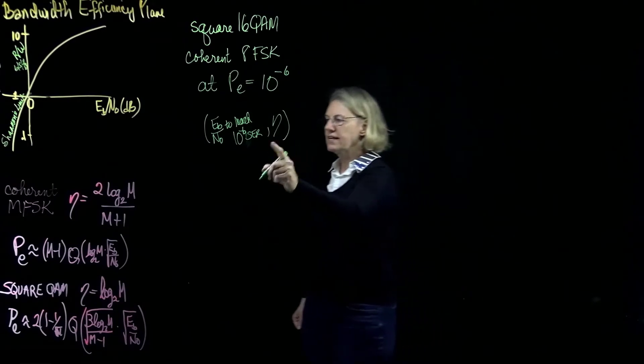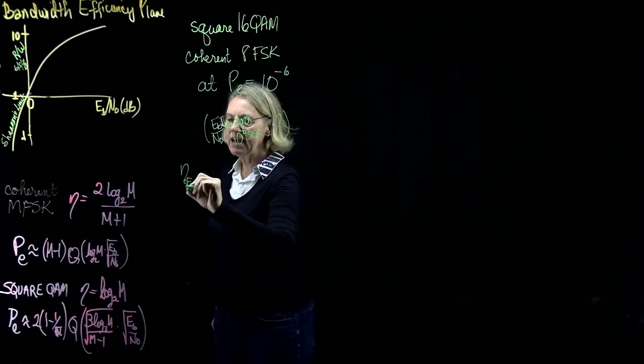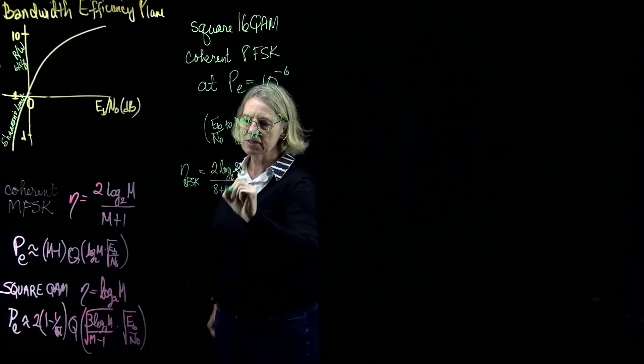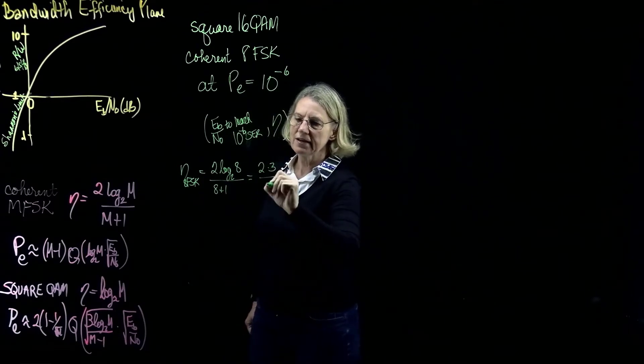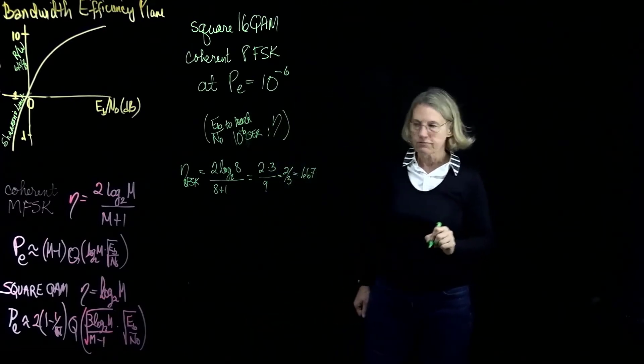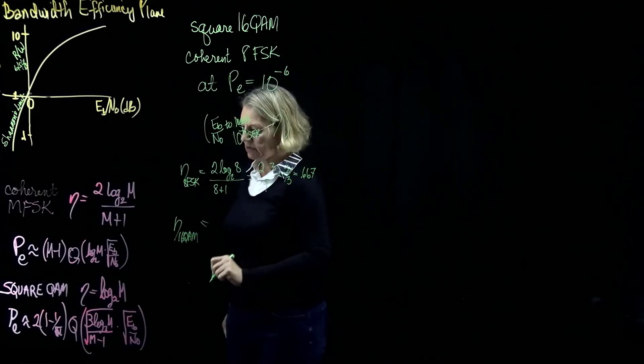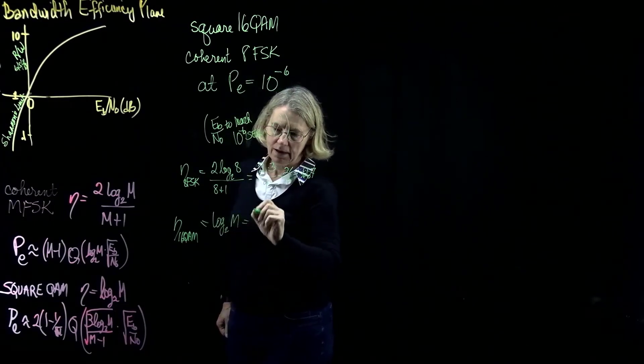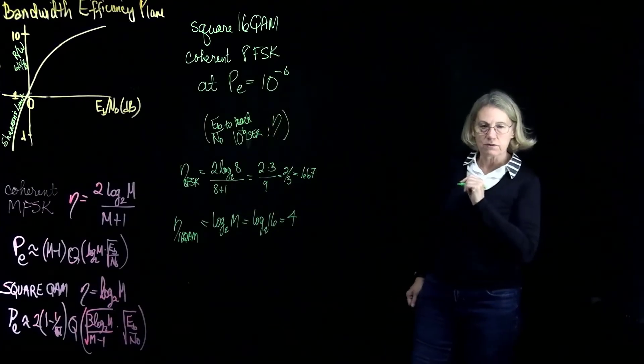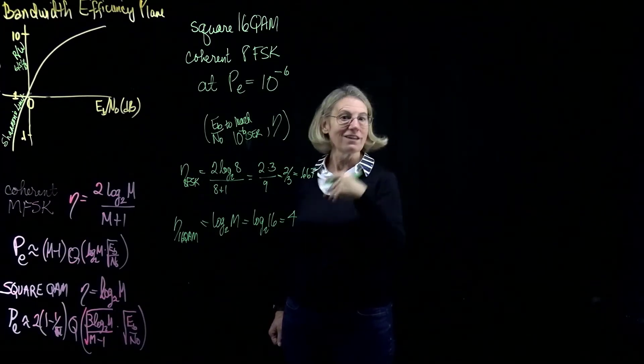So the second coordinate is the easiest part of this equation. So I can calculate the spectral efficiency for 8 FSK, and that will be 2 log 2 of 8 divided by 8 plus 1. So 2 times 3 divided by 9, it's 2 thirds. And for 16 QAM, again, this is the easy part of the question, and the spectral efficiency would just be log 2m, log 2 of 16, and we're looking at 4. So right away, we notice something. And that is that this 0.667 is smaller than 1, and the 4 is larger than 1.